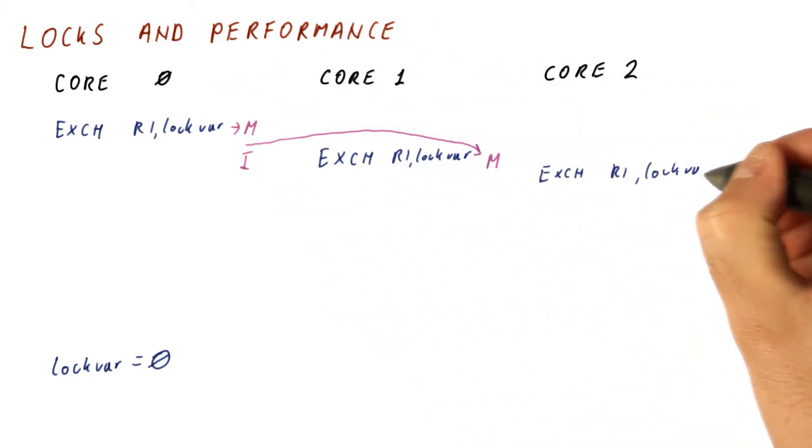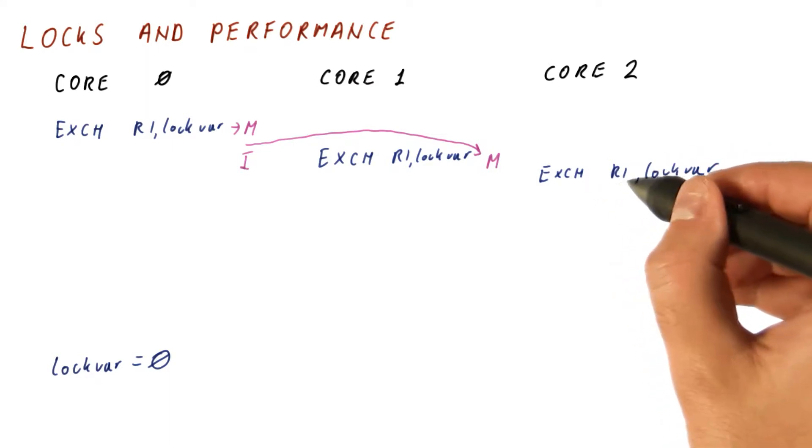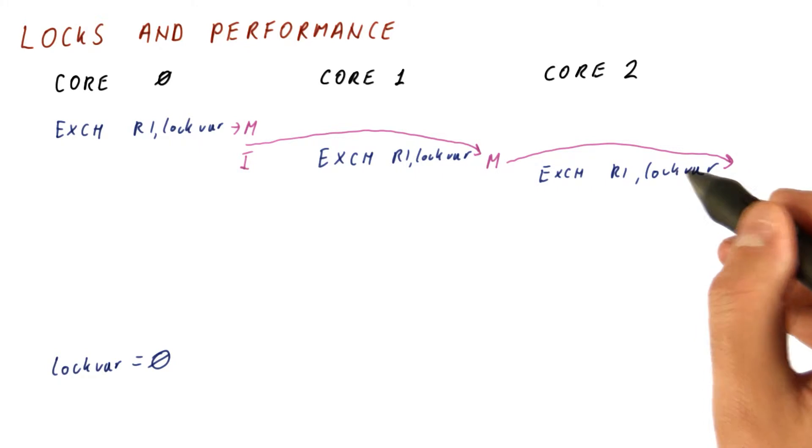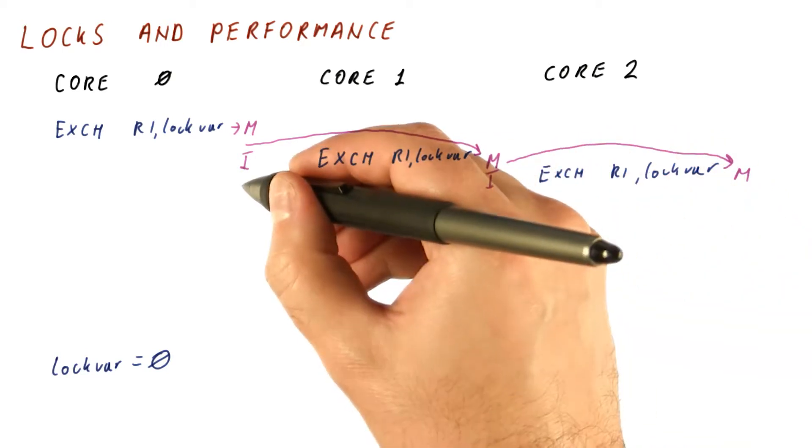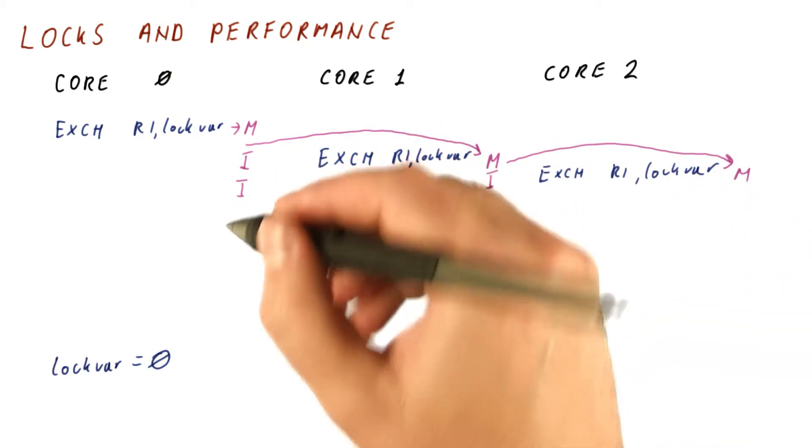Let's say that core zero now does its own exchange, does the same thing, tries to grab the lock, sees that it's one, will try again. But because it did a write to lock var, now it grabs the block in the modified state, and core one gets it in invalid state, and in core zero it stays invalid.